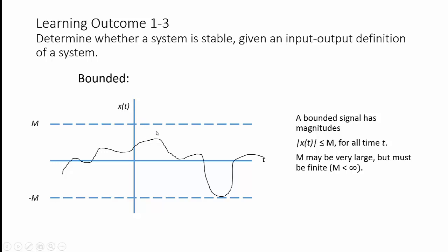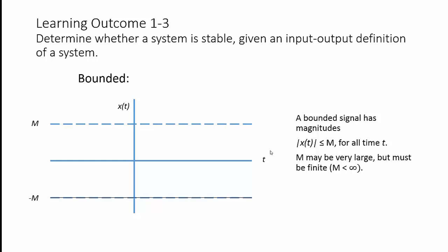Likewise, on the positive side, it does not need to reach m if it does on the negative side, to be bounded by m. A constant that has the value of m is also bounded by m, and a constant that has the value of negative m is bounded by m.